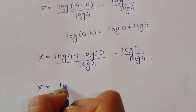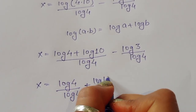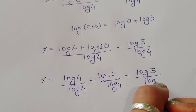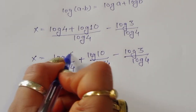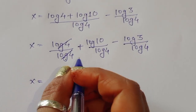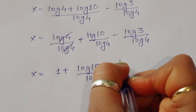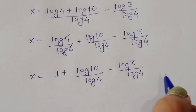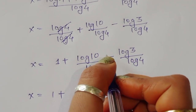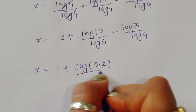Separating further: x = log(4)/log(4) + log(10)/log(4) − log(3)/log(4). The log(4)/log(4) term cancels to 1, so x = 1 + log(10)/log(4) − log(3)/log(4). We write 10 as 5 × 2.